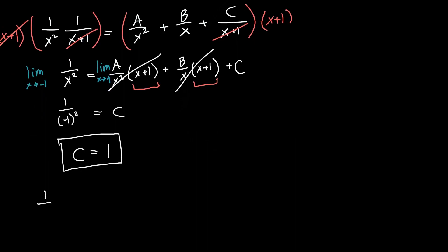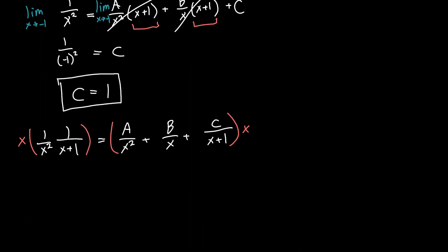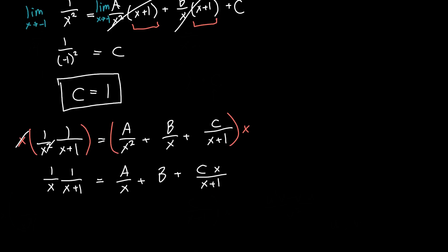Now let's try to get B. We multiply everything by x, which gives us 1 over x times 1 over x plus 1 equals A over x plus B plus C times x over x plus 1. We've got B by itself, but now there's a problem: if we try to plug in x equals 0, the A term and the left-hand side both blow up — they approach infinity. That's no good; that doesn't give us any information.